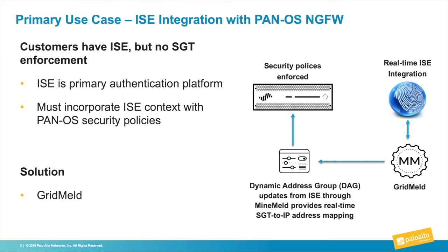For customers that have a Cisco-centric network and are moving towards DNA, ISE, and SGTs, Palo Alto firewalls can be a key enforcement point in the network based on these SGTs. This means customers can still leverage all the additional threat-centric capabilities Palo Alto firewalls have to offer, such as App-ID, threat prevention, URL filtering, DNS security, WildFire, and more. With PAN-OS 9.0, the Palo Alto firewall can now receive real-time DAG updates of SGT-to-IP address mapping from Cisco ISE.